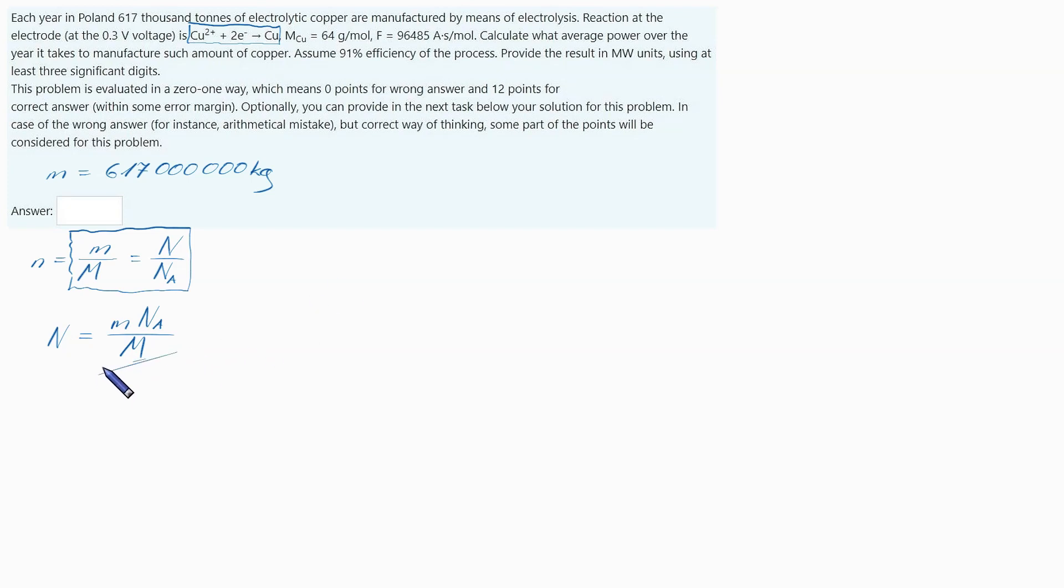If you can read, you know that number of electrons is twice that. Let's write it down. Now I want to calculate the amount of charge that can be carried by this number of electrons. Q equals number of electrons times charge of one electron, which is e.